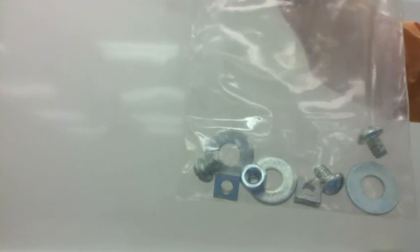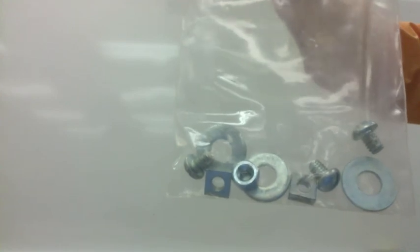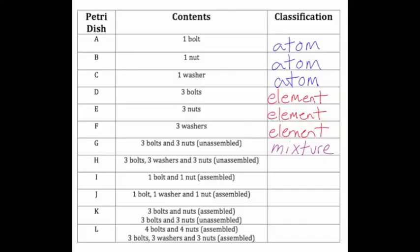Bag H has three bolts, three nuts, and three washers all in the same bag that are not assembled together. This is also a mixture, this time of three different elements.